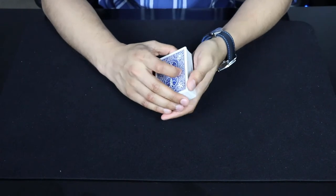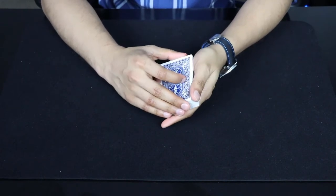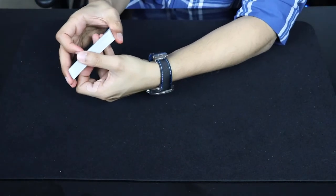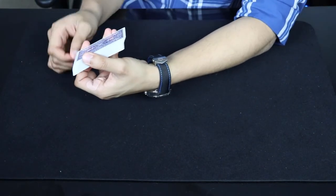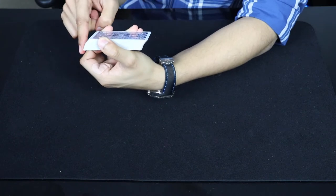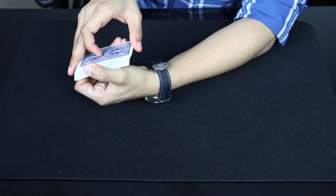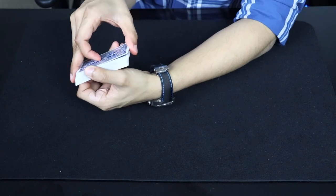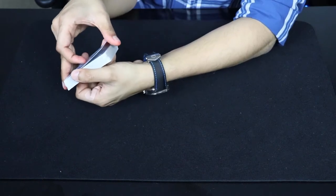So now once the card is on top, what you want to do is get a thumb break below the top card. And the way we're going to do this is you can have the cards in a tilt like this. So going this way and this way, it'll make it a lot easier for your thumb to come over and just lift off one top card and get a break right beneath it.